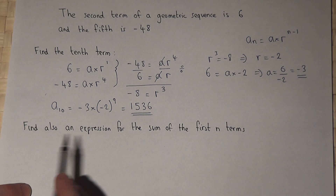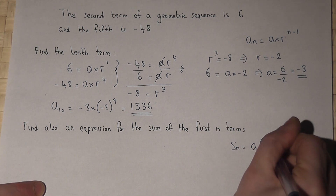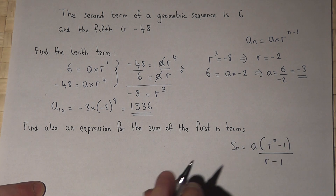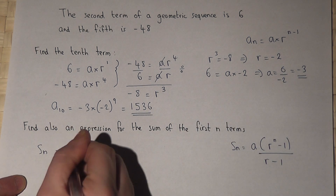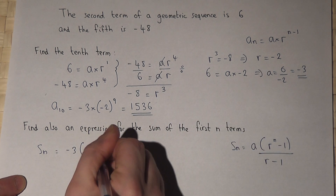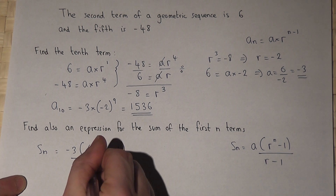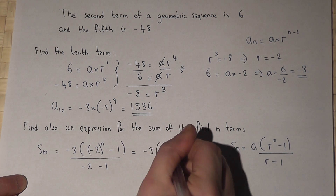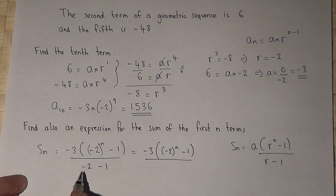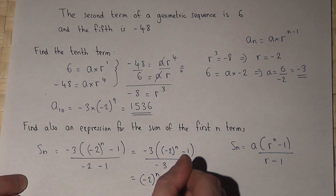In part 2 we're asked for an expression for the sum of the first n terms. We know the sum formula is a times (rⁿ minus 1) all over (r minus 1). Substituting in: minus 3 times ((minus 2) to the power of n minus 1), all over (minus 2 minus 1), which is minus 3. The minus 3 terms cancel out, and we're left with (minus 2) to the power of n minus 1 as the formula.